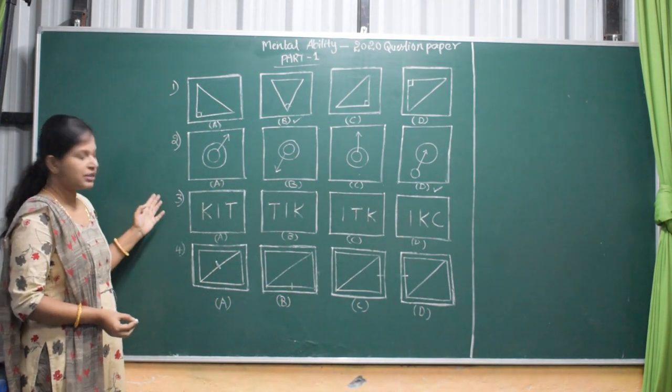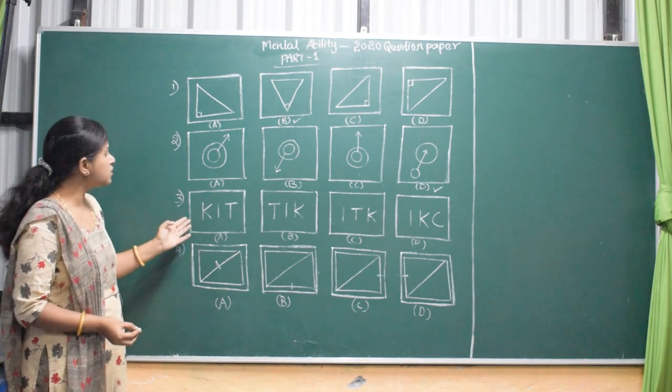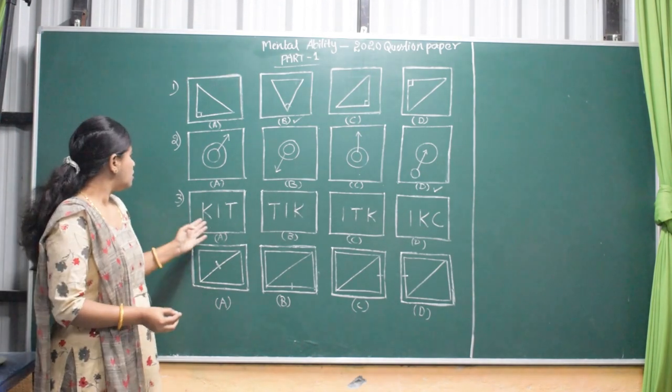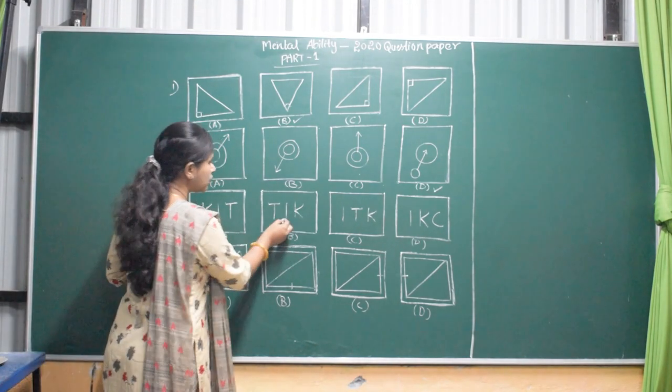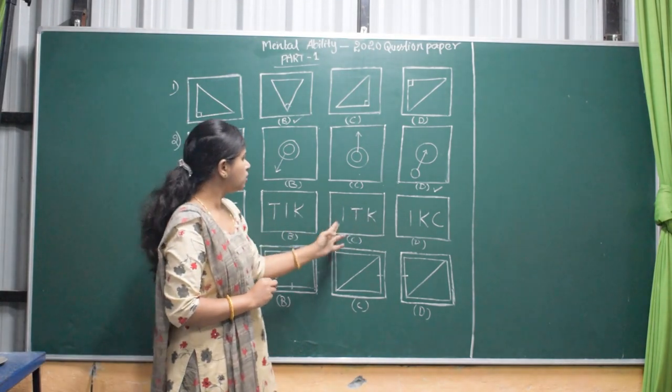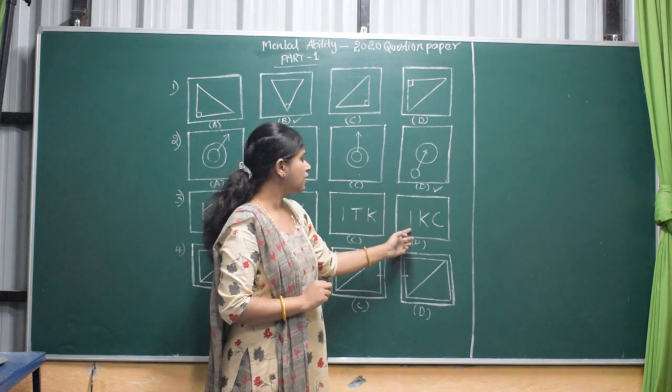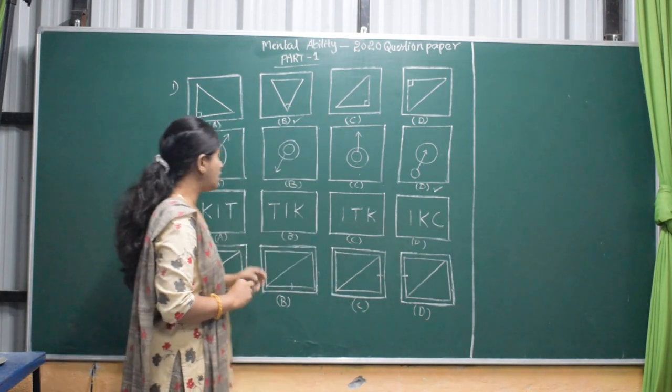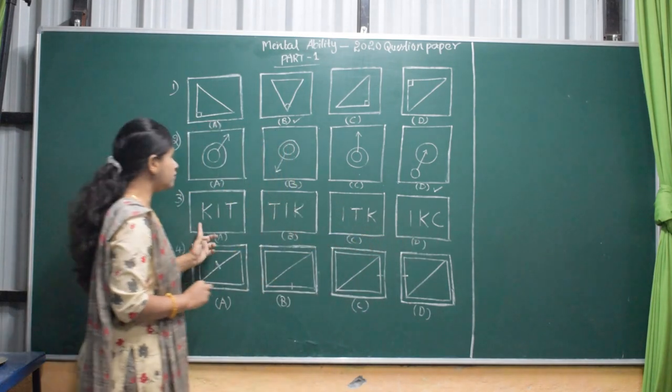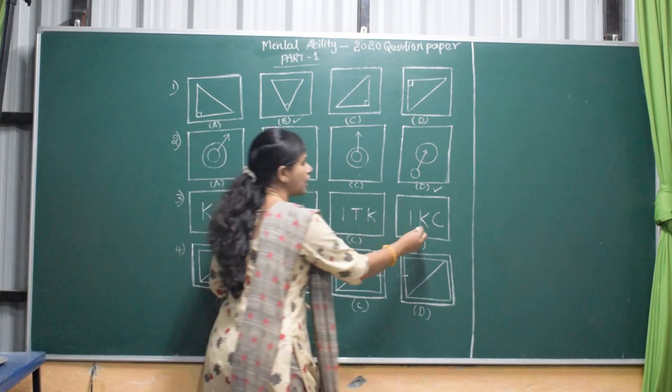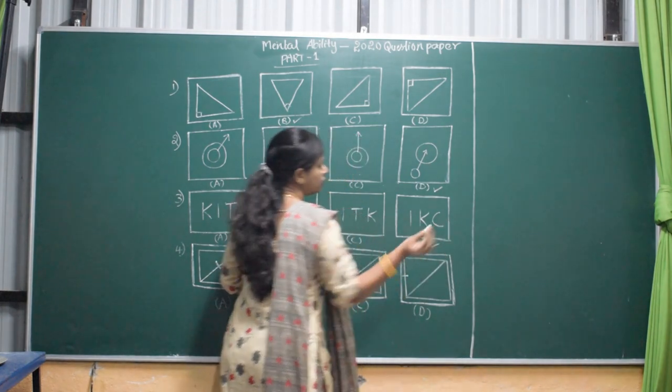Move on to third question. Here, English alphabets are given. First, here is KIT. Here also KIT. Here also KIT. But here KIC is here. Instead of T, C is here. In these 3 figures, KIT is here, but here KIC. So this is different.